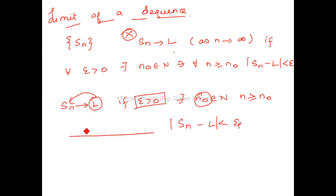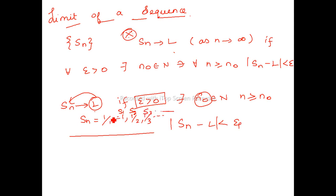So if you take your sequence SN to be 1/n, expanded it is: 1, 1/2, 1/3, and so on. This is S1, S2, S3, and so on. On the number line, it will converge to 0 — values 1, 1/2, 1/3 approaching zero like this.